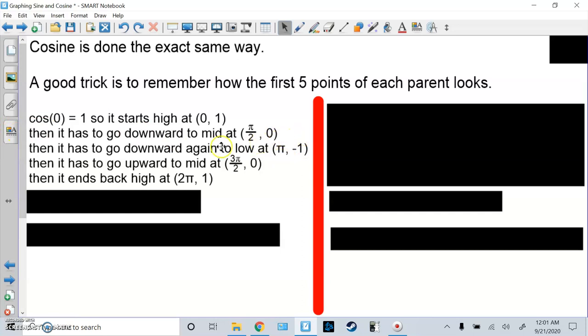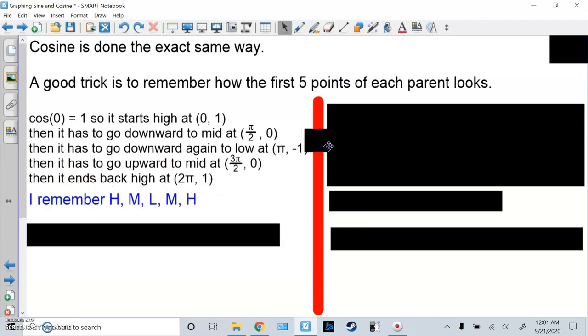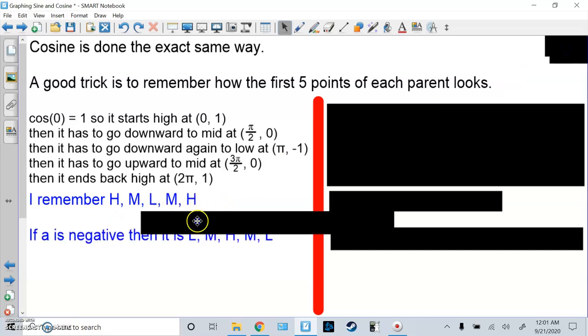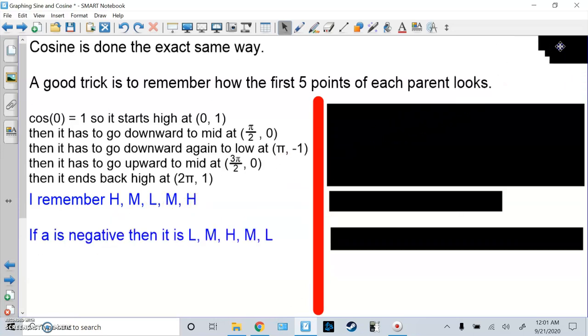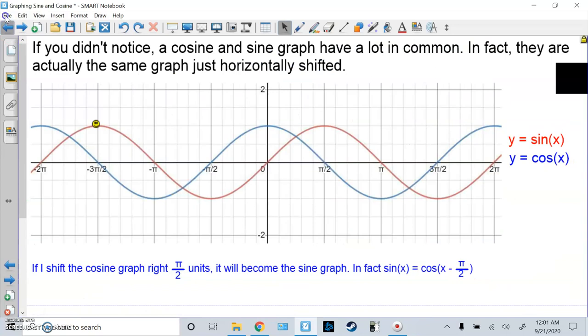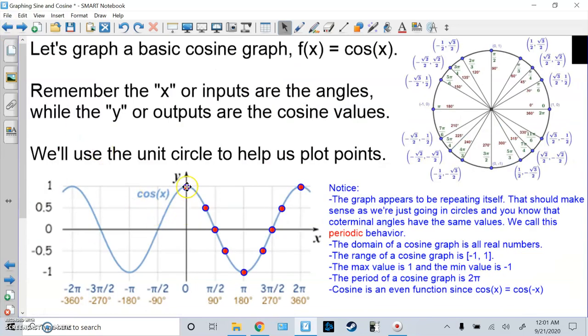Then it goes back up, because that's the lowest, negative 1. It goes back up to 3 pi over 2, 0. Then it goes up again to 2 pi, 1. So cosine of 2 pi is 1. So really, I remember high, mid, low, mid, high. And if A is negative, then you just flip them. So it said high, it would be low, middle, high, middle, low. So going back to the cosine graph, it starts high, goes to the middle, then it goes low, then it goes back to the middle, then it goes high.